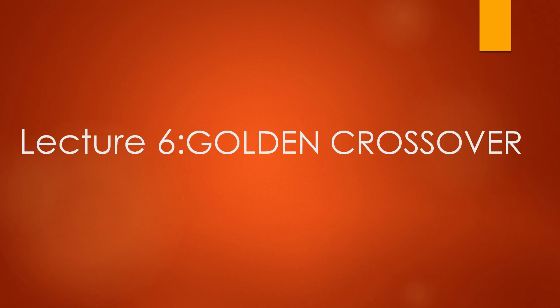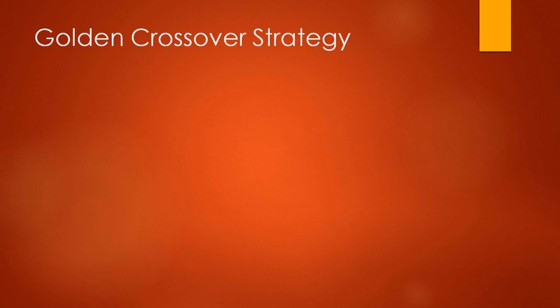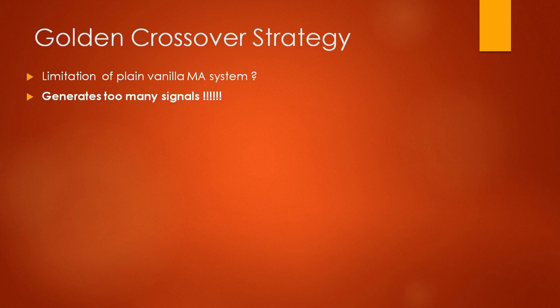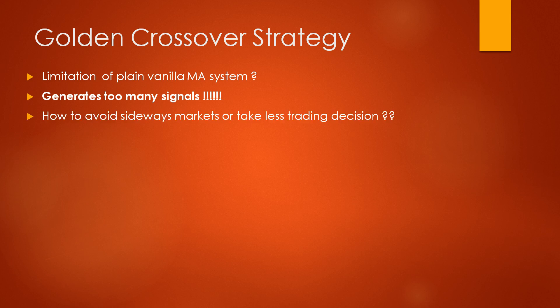Hello friends. In the last lecture we studied a simple moving average based trading system, but didn't you notice the limitation of a plain vanilla moving average system? This system generates too many signals and for a common trader or investor it's difficult to track and take positions. Moreover, it is difficult to eliminate whipsaws, that is sideways movement. So what if we develop a system which can eliminate sideways market or makes us take fewer trading decisions?